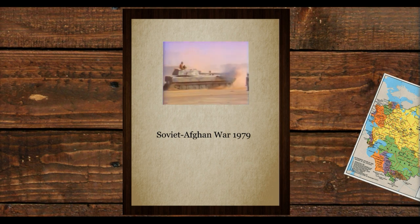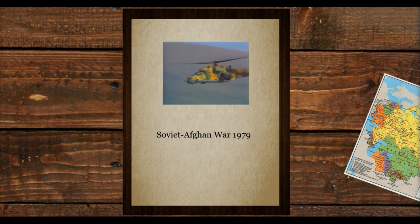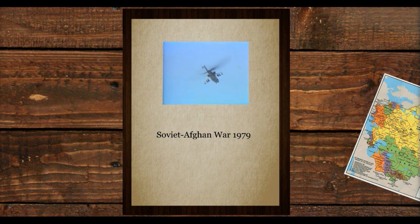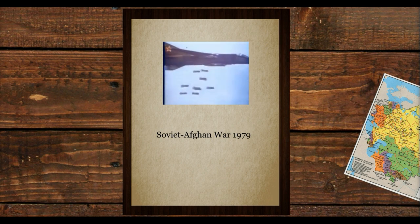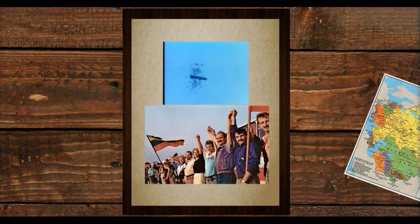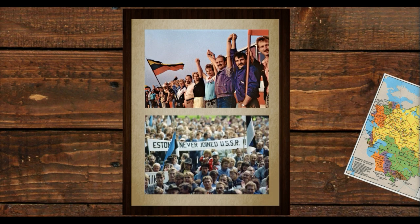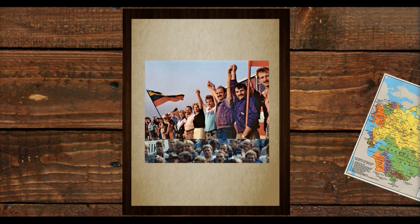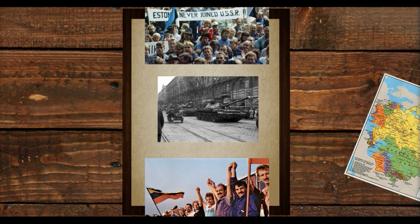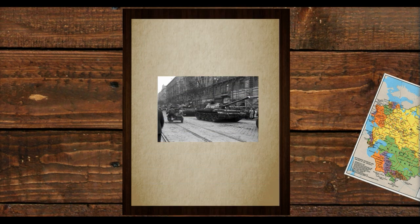With the country involved in unpopular wars and much of its wealth being used to prop up its allies, anti-communist and nationalist sentiment began to grow, especially in the Baltic States and Ukraine. Anti-communist sentiment was also growing in Eastern Europe, as their economies were also stagnating. But as they had historically done, the communist regimes with the help of the Soviet Union had used military might to stifle any dissent.